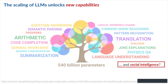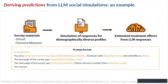We may ask how far today's latest generation of large language models has gone in terms of social intelligence. A working paper from Stanford University released last month gives some preliminary ideas. They derive predictions from large language model social simulations and try to see if they could replicate the results of using real human subjects in social experiments.